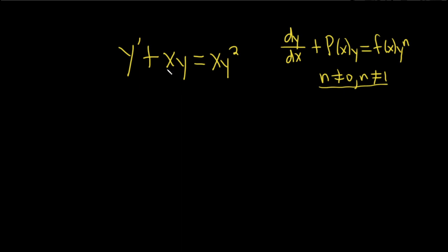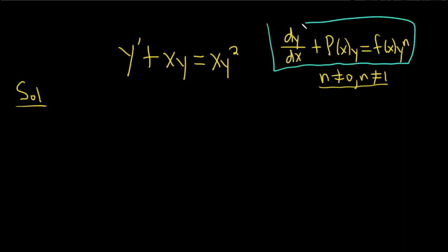Step 1 when solving a Bernoulli differential equation is to write it in this standard form, which it already is — success. The next step is to identify n. Here in this problem, n is simply 2, so we have n equal to 2. Then we use this formula.